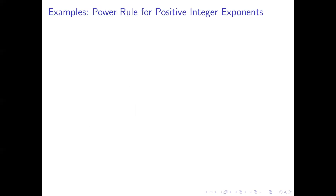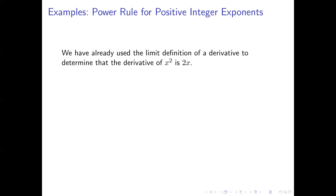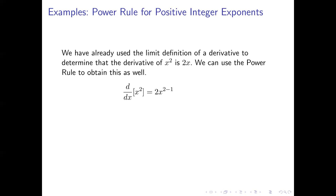Let's take a look at some examples, starting with positive integer exponents. Let's start with something we already know: we've already found the derivative of x squared by using the limit definition of a derivative — we found that the derivative is 2x. The power rule can be used to obtain this as well, because x squared is a power function. The exponent becomes a coefficient, and we subtract 1 from the exponent, so the derivative will be 2 times x to the power 2 minus 1, which simplifies to 2x — the same result found earlier with much more work.